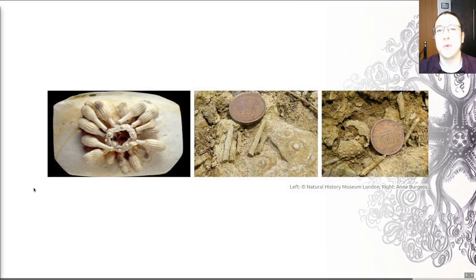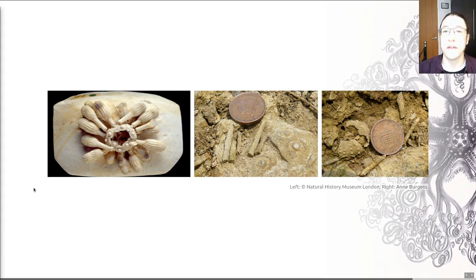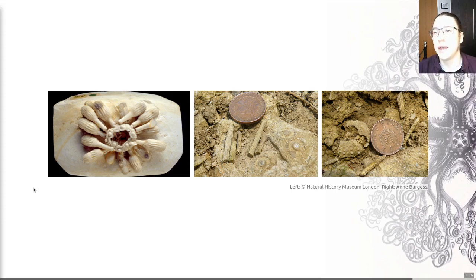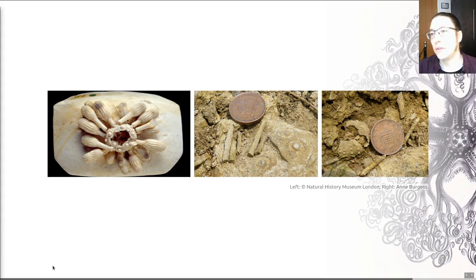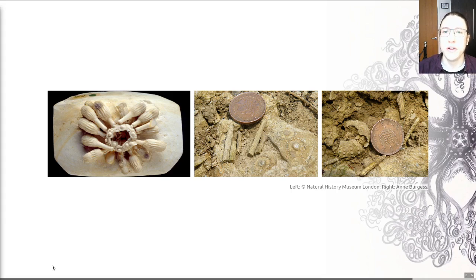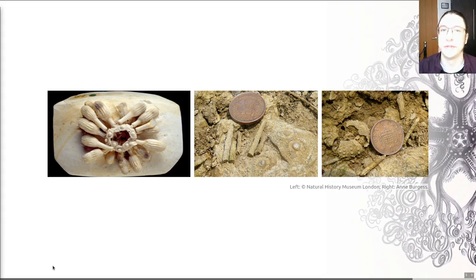In terms of echinoids, you sometimes do get whole fossils preserved. There's a really nice example of this based on the Natural History Museum's collections on the left here. My whole echinoderm experience of finding fossils of these things is based on work within the UK looking in the chalk. That's where this example is drawn from as well. Finding whole echinoderms within the chalk isn't particularly unusual in the southeast of the UK. If you're ever in the southeast, you can find nicely articulated fossils poking out of chalk cliffs, for example.